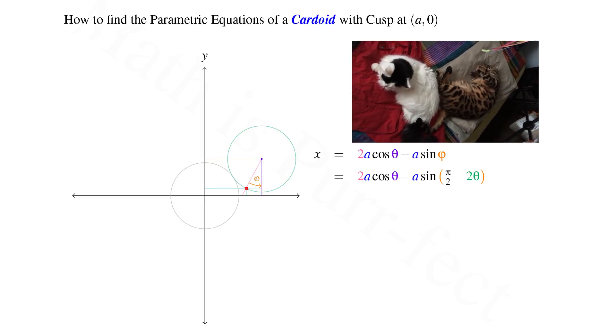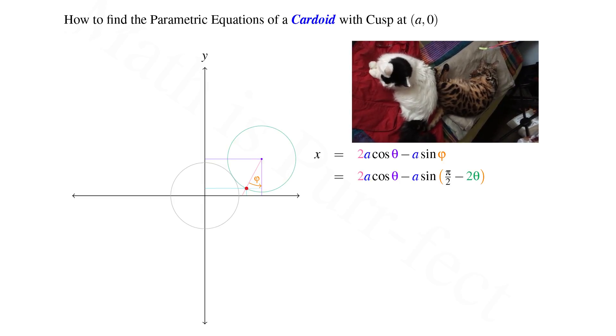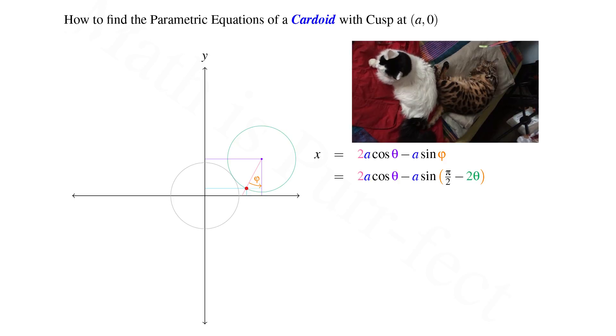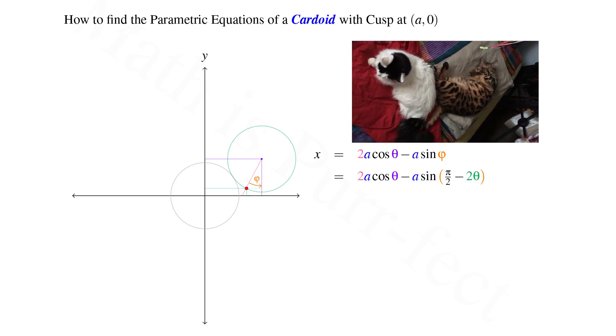But we found that phi was equivalent to pi over 2 minus 2 theta. Hence, using the formula for sine of a difference,